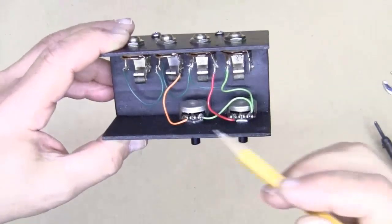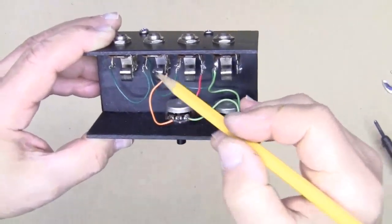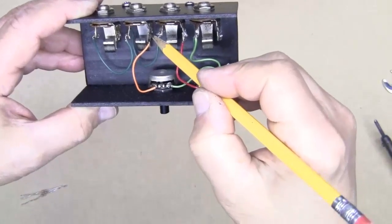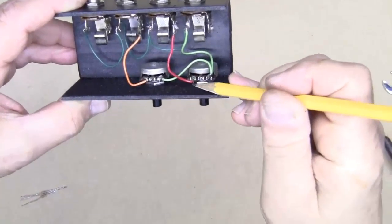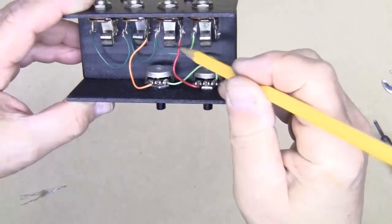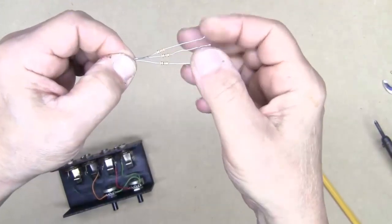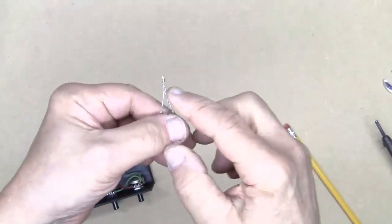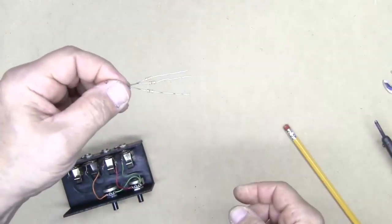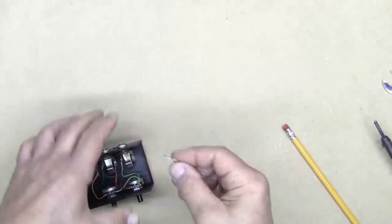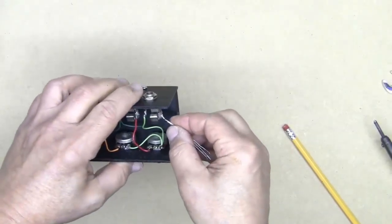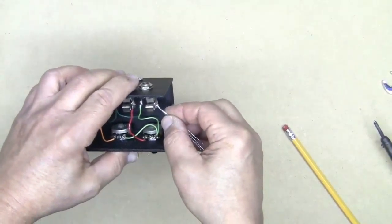I've attached this leftmost lug to the rightmost lug on this jack, and this leftmost lug of this pot to the rightmost lug on this jack. I've also soldered one end of three 10K resistors together, and I'm going to connect those to the rightmost lug of the output jack.